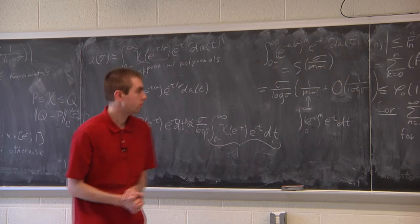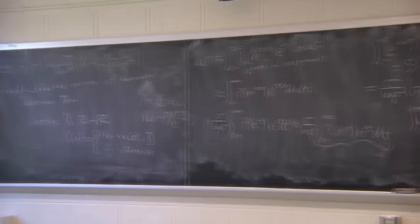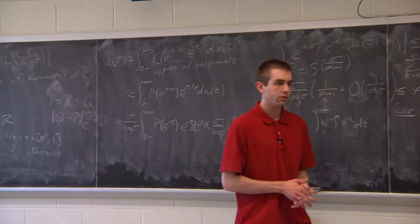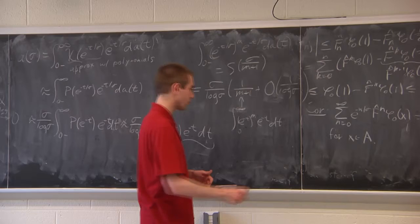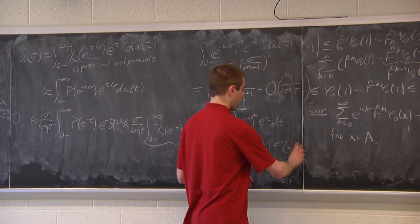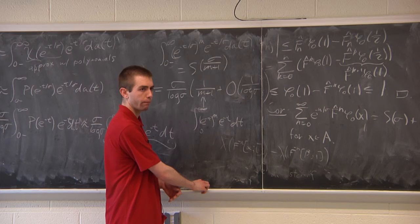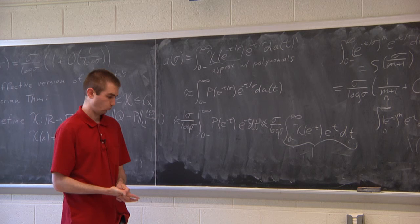Are there any questions? Yes — to handle a general interval [α, β], we can simply do a subtraction: take [α, 1] and subtract off [β, 1], which gives us any interval we want.